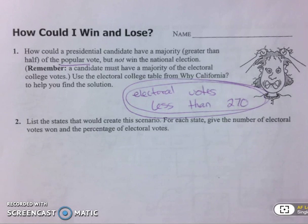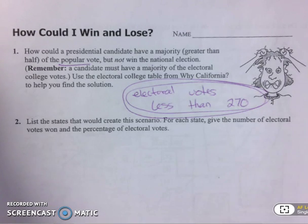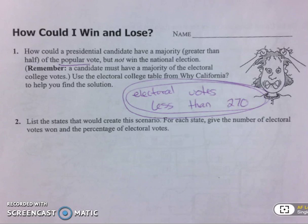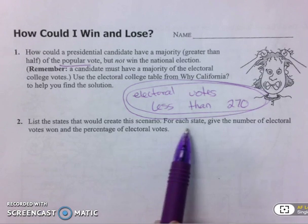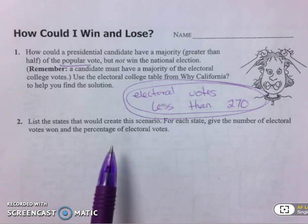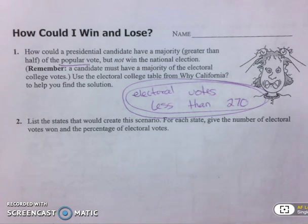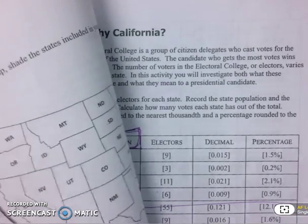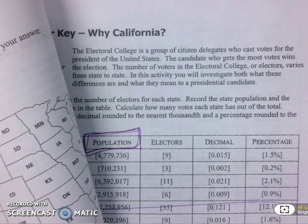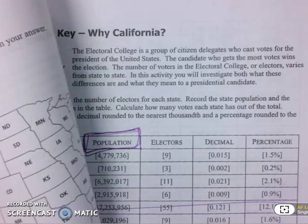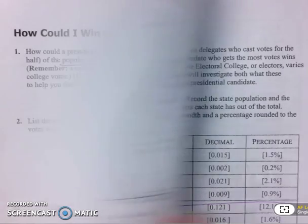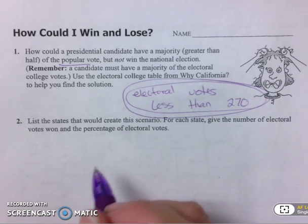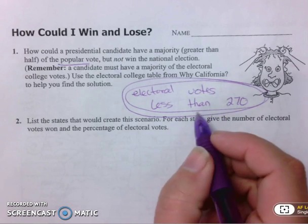Hello, I just wanted to go over how to do this last part of our homework because I know it is pretty difficult. There's more than one answer here and you want to list everything — state the number of electoral votes and percentage of electoral votes. Basically, choose states that maybe have a large population but not a lot of electoral votes, because remember we have to lose the election.